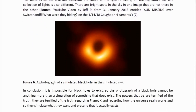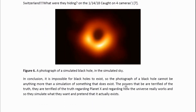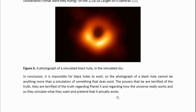And here's a photograph of that black hole — therefore, a simulated black hole in the simulated sky. In conclusion, it is impossible for black holes to exist. The photograph of a black hole cannot be anything more than a simulation of something that does not exist. The powers that be are terrified of the truth regarding Planet X and regarding how the universe really works. And so, they simulate what they want and pretend that it actually exists.